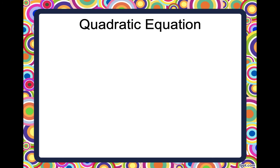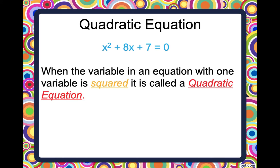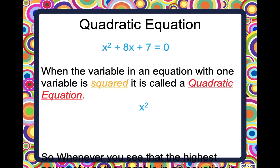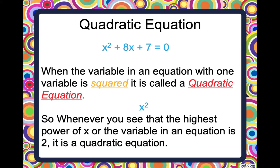Let us first understand what are quadratic equations. Here we have an example of the quadratic equation: x² plus 8x plus 7 is equal to 0. On the left hand side we have a quadratic expression and on the right hand side it is equated to 0. So when the variable in an equation with one variable is squared, it is called a quadratic equation, which is clearly visible that x is being squared. Whenever you see that the highest power of x in an equation is 2, it is a quadratic equation.